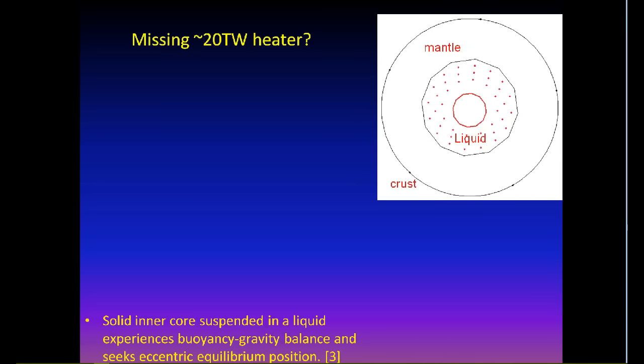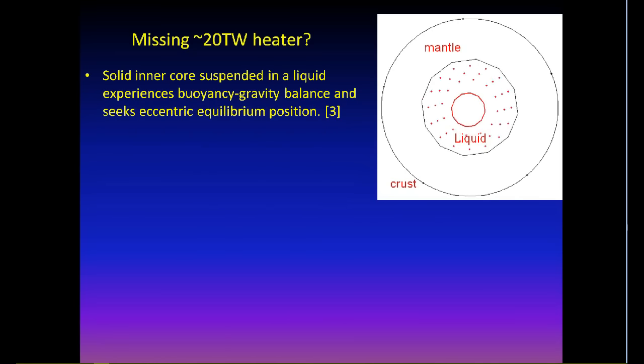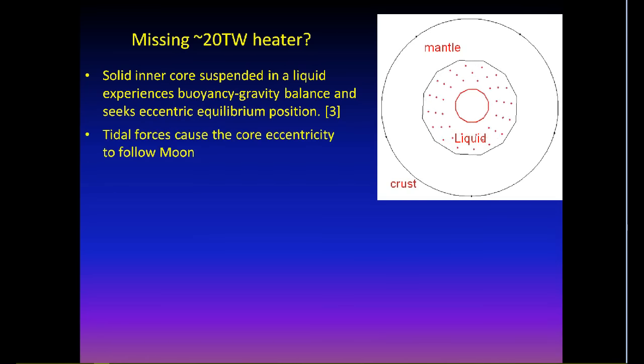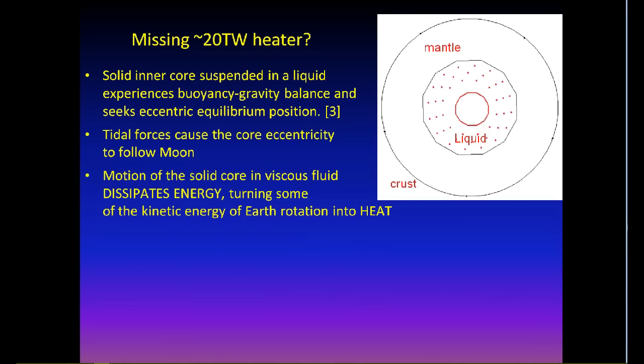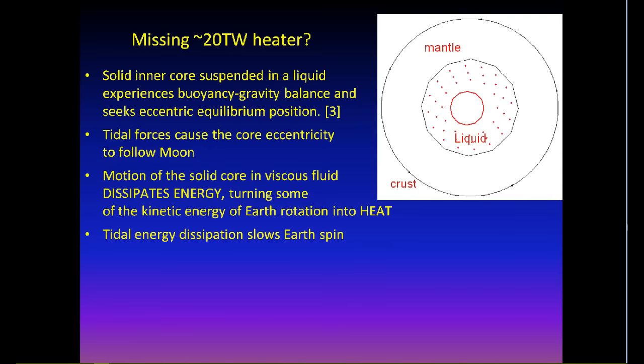Earth spins. Solid core suspended in a liquid experiences buoyancy-gravity balance. Since buoyancy and gravity forces are both zero in a concentric position, the core equilibrium becomes eccentric. Tidal forces cause the core eccentricity to follow Moon. Motion of the solid core in a viscous fluid dissipates energy, turning some of the kinetic energy of Earth's rotation into heat. Tidal energy dissipation slows Earth's spin.